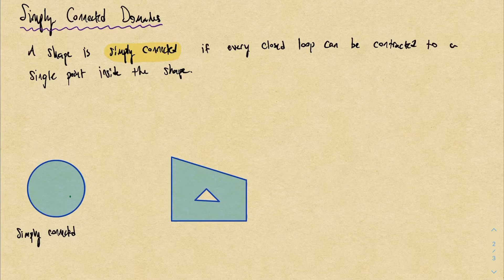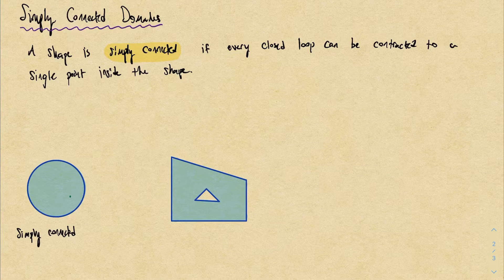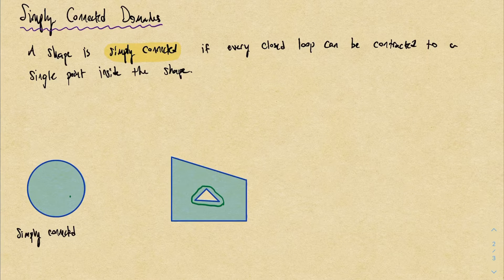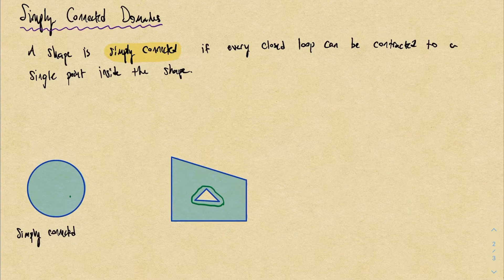In contrast, here's another shape — a two-dimensional blob that looks like the world's worst donut. I claim this is not simply connected, because I can draw a loop that goes around the hole, and no matter what I do, I can't contract this loop to a single point. I can try to bring it closer to the hole, but I'll never be able to get around the hole. Therefore, because we found a curve that we cannot contract, this shape is not simply connected.